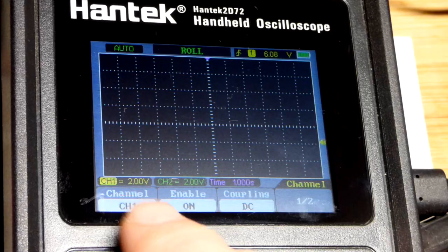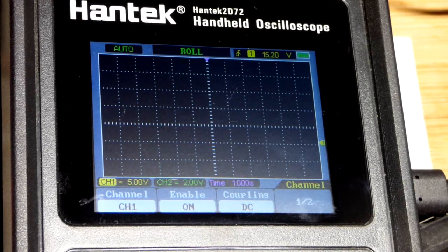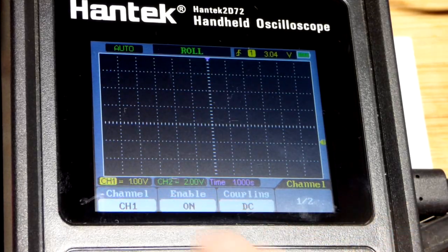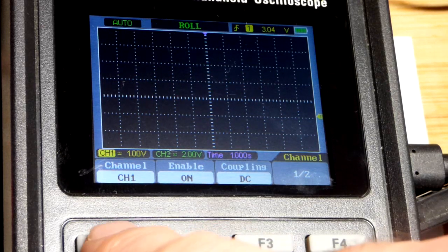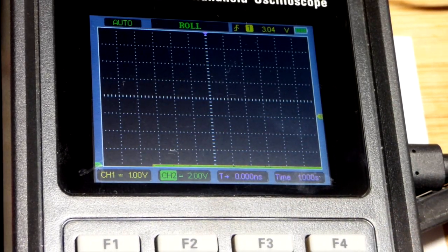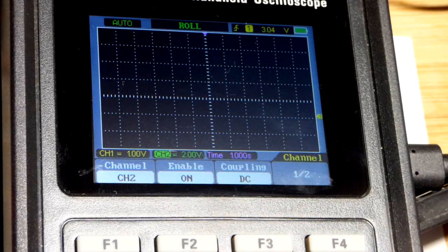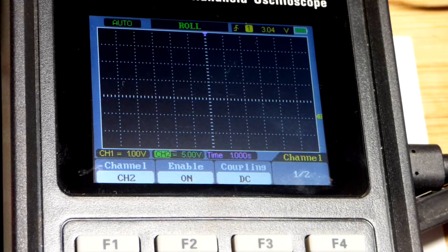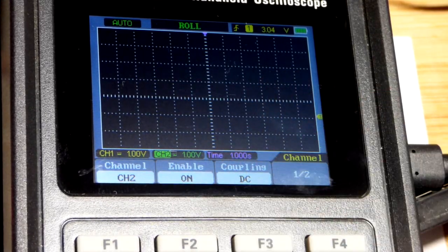And so when I go to the channel button right there, channel 1, then we got 1 right there. I believe if I go to the right, yep, went to 5 volts division. Now it's going down to 1 volt per division. And then I can change the channel by pressing F1 right there. Now we're at channel 2. And so they're both 0 volts. So they're going to be in the same spot there. But I can do the same thing. That was right arrow, left arrow. Now we're down to 1 volt per division.